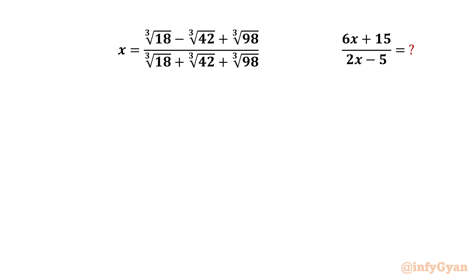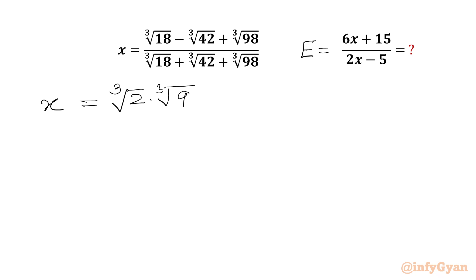Let's get started by considering this required expression equal to e first. Now I will write x equal to cube root of 18. Can we factor 18 as 2 times 9? So we can write cube root 2 times cube root 9, minus cube root 42.